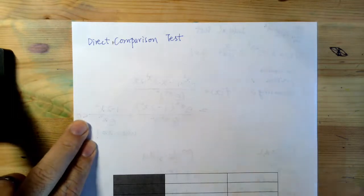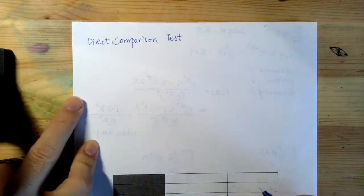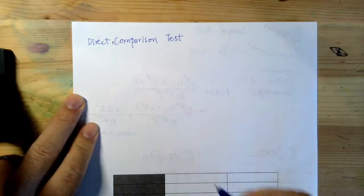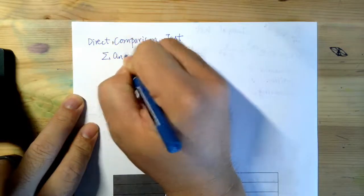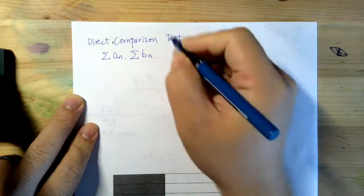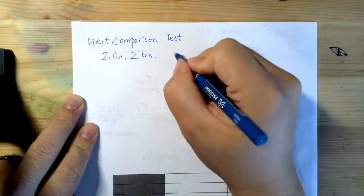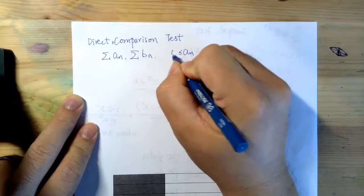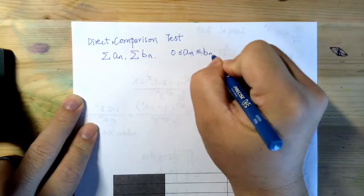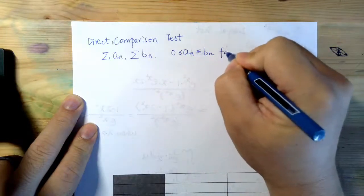And so the direct comparison test says like this. If we have two series, a_n, b_n, and we are satisfying this: a_n is greater or equal to zero, less or equal to b_n for all n.